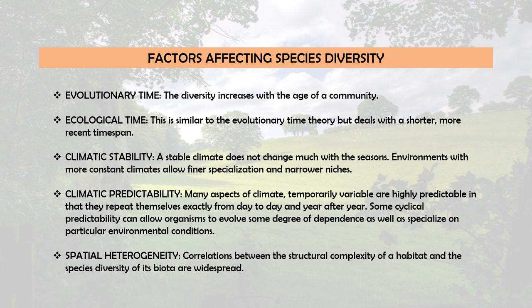The next factor is spatial heterogeneity. Correlations between the structural complexity of a habitat and species diversity are widespread. For example, a forest contains more different species of birds than a grassland, and an arboreal desert generally supports more species of lizards than one without trees. Different habitats harbor different types of species, so spatial heterogeneity is an important factor affecting species diversity.